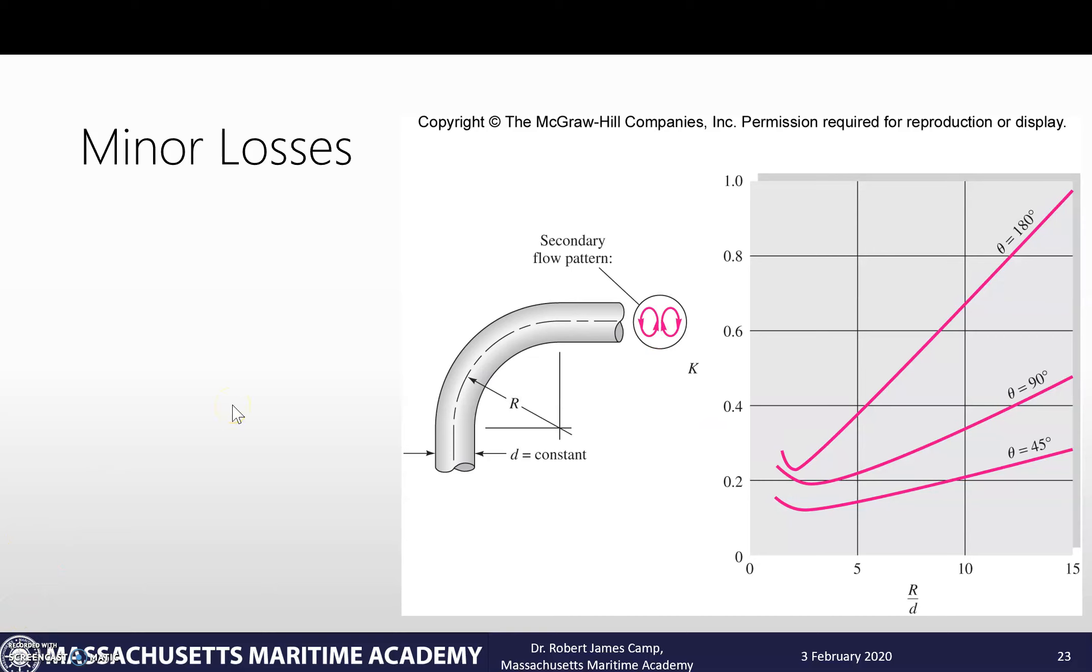As we look at things, what do we need? We need to know what r over d is. We need to know what our bend angle is. Looking at the picture, it's a 90 degree bend angle, so we're going to be looking at this line right here. r over d - well, r is our bend radius which was 12 inches.